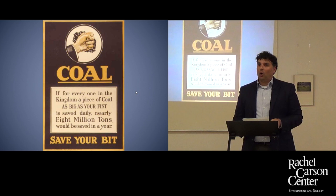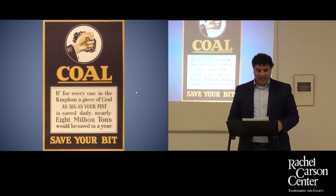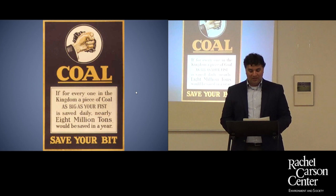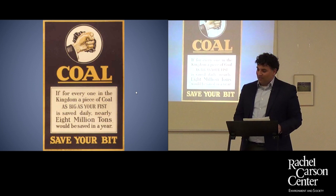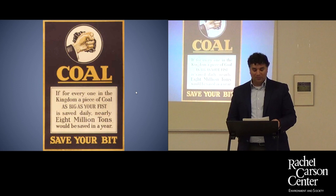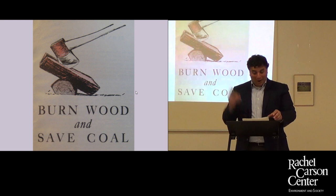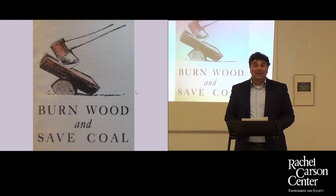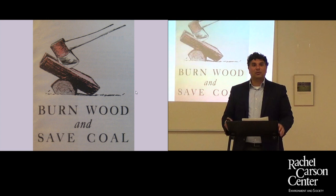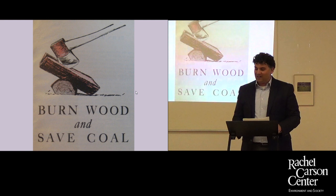In 1914, coal was the principal source of industrial energy. In the attempt to offset major shortages, governments typically rationed coal or encouraged citizens to conserve it. This image from Great Britain suggests how people could best conserve coal when heating their homes. In the United States there was the suggestion: don't burn coal, burn wood instead — there are so many forests out there, just chop them down and burn those. This connection shows that the need for timber reserves taxed forests around the world, and as a result deforestation accelerated during the war, but in an uneven fashion.